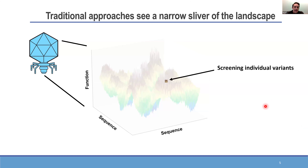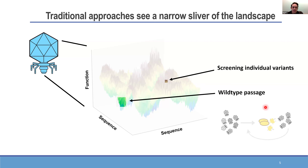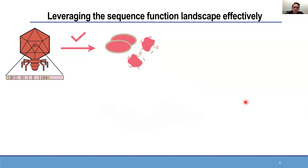If you take a traditional approach — the science of phage going back 50 to 60 years — you would pick a plaque and characterize it, giving you a really tiny sliver of that landscape: one or two mutations and their effect under certain conditions. Another common approach is passaging a wild-type phage in a directed evolution-like experiment. The idea is that, like any virus, phages exist as a quasi-species with a lot of diversity, and you passage that phage pool over and over selecting for a specific phenotype. That approach is powerful in some circumstances, but you're still only getting a small window into that landscape.